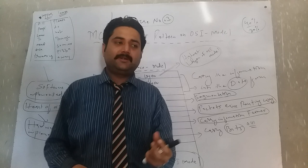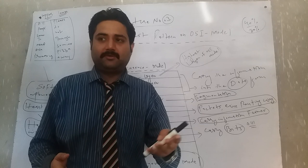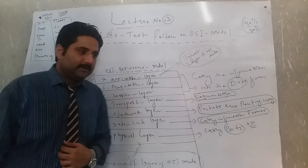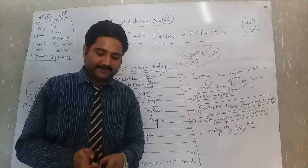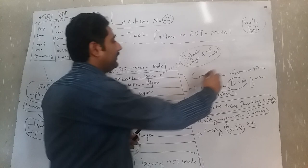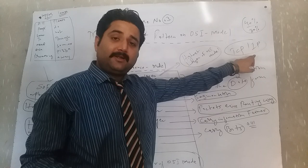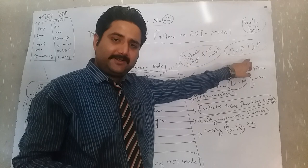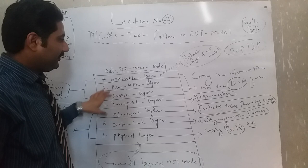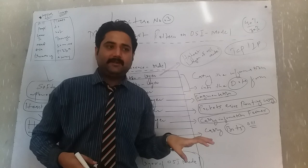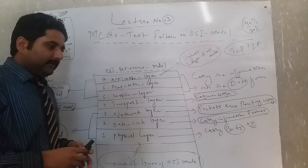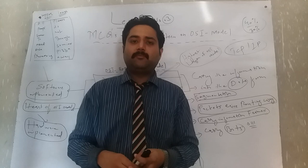Before starting this lecture and MCQs test, I would like to guide you regarding the OSI model. First of all, the OSI model is a reference model — reference means a theoretical, conceptual design. TCP/IP — Transmission Control Protocol and Internet Protocol — is the next topic; we will cover that in our next lecture. In this series, we will focus on and deeply learn about the OSI model.